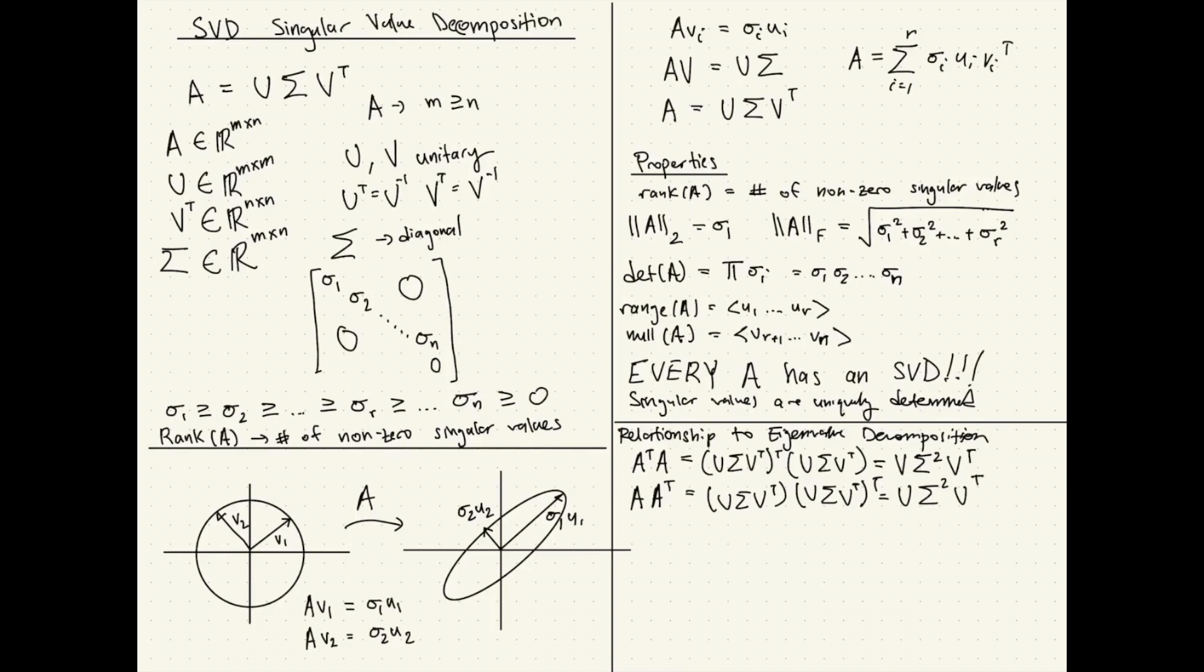So what does this tell us? Well, it tells us something really interesting about the singular values as related to the eigenvalues of each of these respective matrices. The eigenvalues of A transpose A and A A transpose, the lambda I eigenvalues are equal to the sigma I squared.